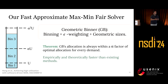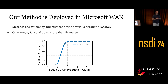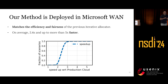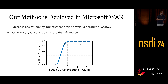We show both empirically and theoretically that this is faster than existing methods, and all these guarantees led to a production deployment at Microsoft. Geometric Binner has been managing Microsoft's wide-area network traffic for over a year. Our measurements show that it matches the efficiency and fairness of the previous iterative solver while being 2.4 times faster on average, and sometimes more than five times faster.